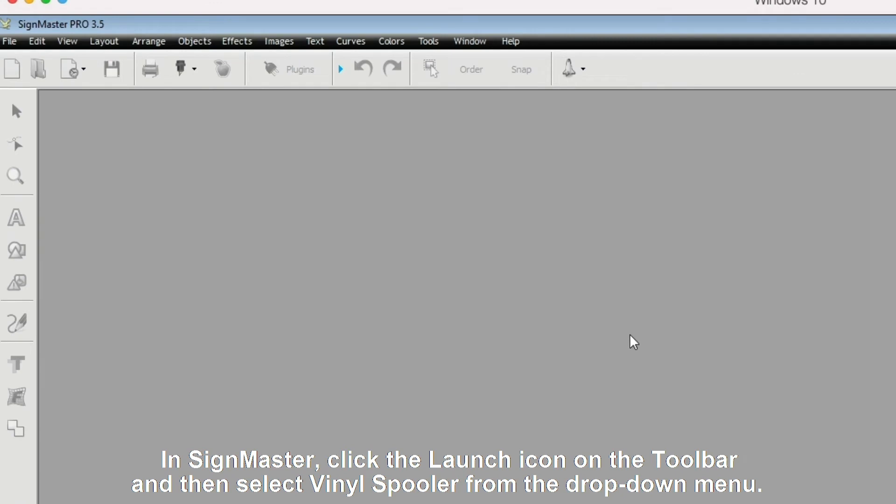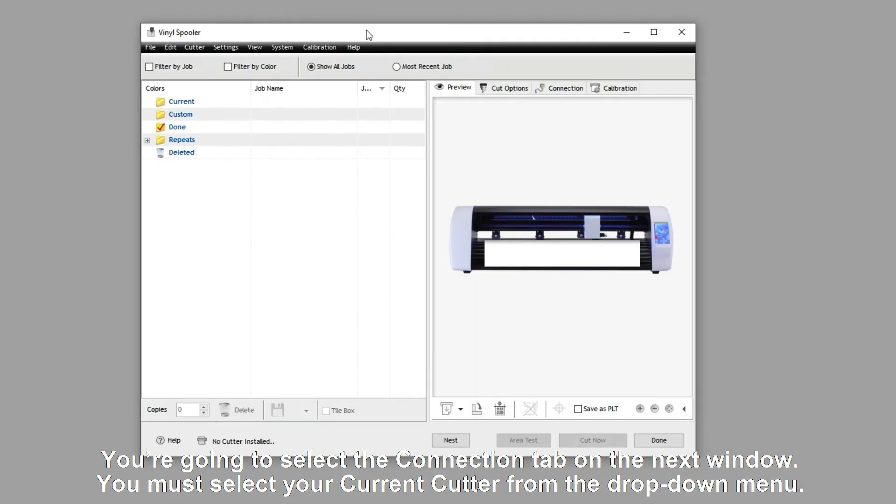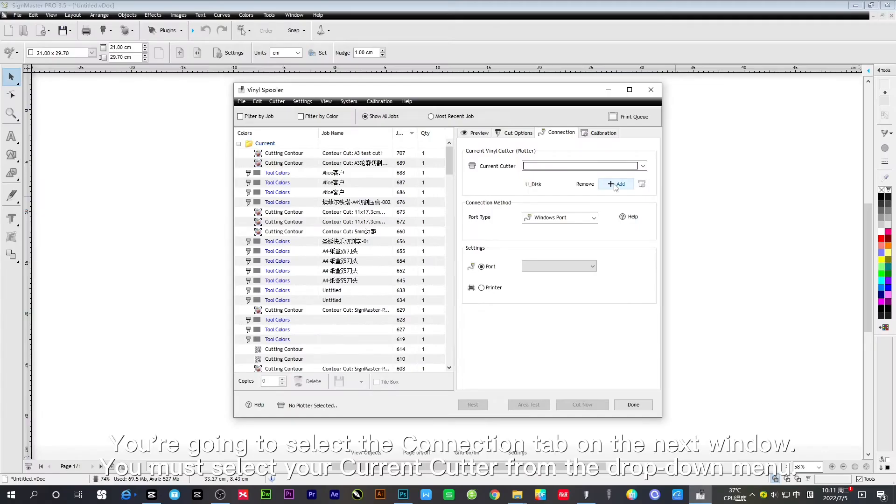In Sign Master, click the launch icon on the toolbar and then select Vinyl Spooler from the drop-down menu. You're going to select the connection tab on the next window.